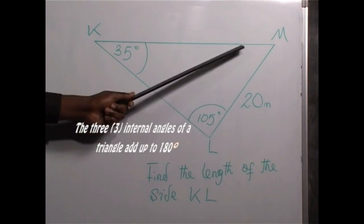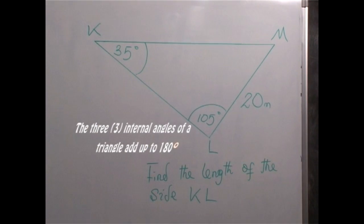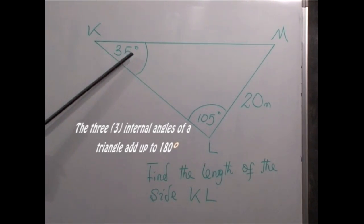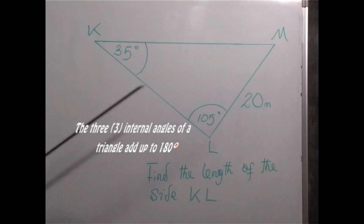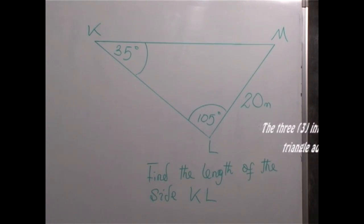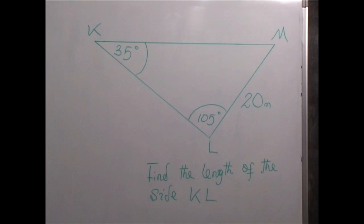Because these three angles in the triangle must add up to 180 degrees. So 35 plus 105 will give us 140. When we subtract 140 from 180, the angle at M is going to be 40 degrees.